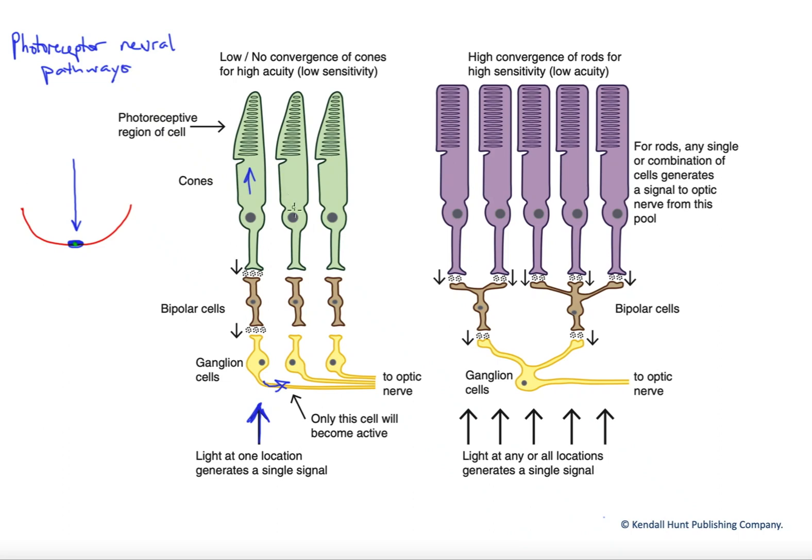Now, because there is zero convergence at the fovea centralis, it means that the information is not pooled. In other words, light is not pooled across cones - you have to have relatively high intensity of light to activate this individual cone, but we will then be able to spatially recognize light hitting this very small area. In other words, we have very high acuity.